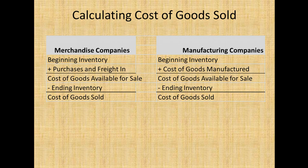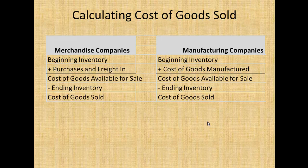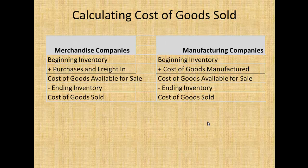Now what I have here are the two types of companies. If you remember back in Principles 1, there's actually three: there's your service companies, there's your merchandising companies, and then there's your manufacturing companies. Here we're really dealing with just merchandise and manufacturing. Service companies don't have cost of goods sold, but both merchandise and manufacturing do.